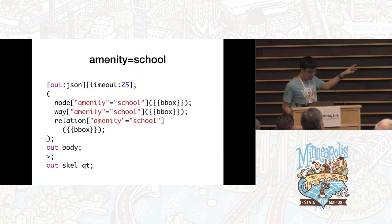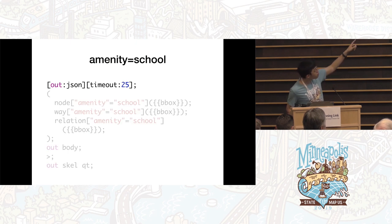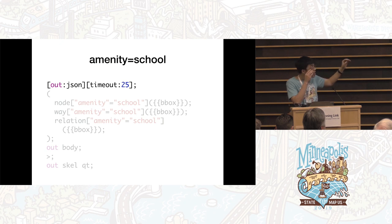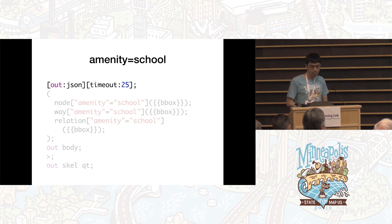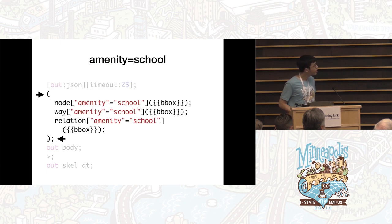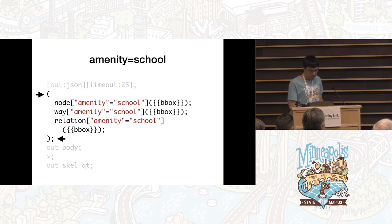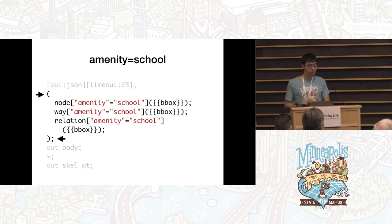Let's break it down and see what each part means. The first part you'll always see with generated Overpass QL queries is the settings — here it specifies the output format and the timeout. Normally you can leave the settings alone. The wizard generates one line for each kind of element that's going to match: node, way, and relation.